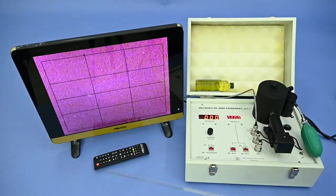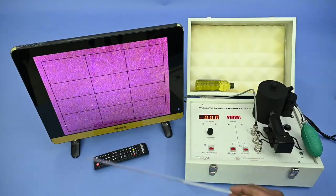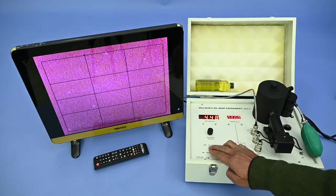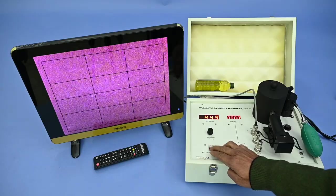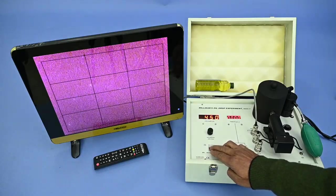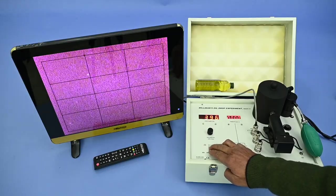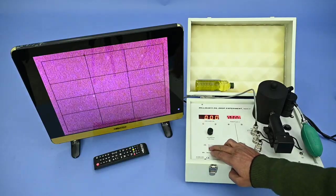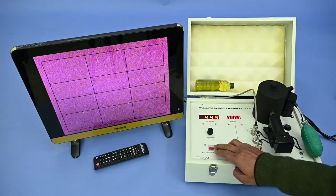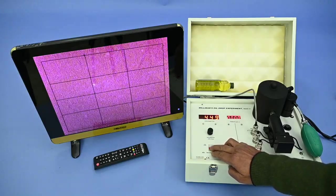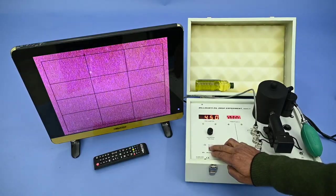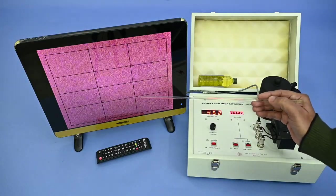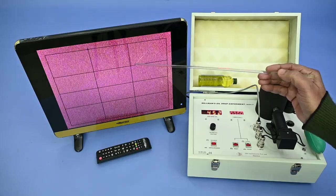Now, select a suitable moving oil drop like this and apply the voltage around 400 to 500. And the drop will move upward when the voltage is applied. And when it is off, it comes down. Now, note down the rise time and fall time of the droplet between second and fourth line.